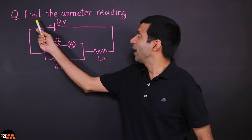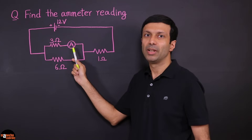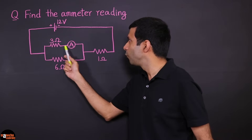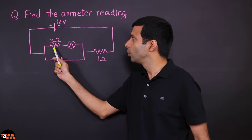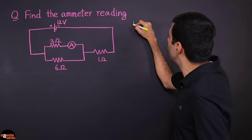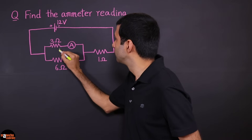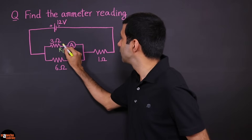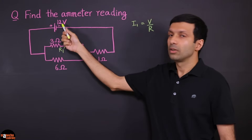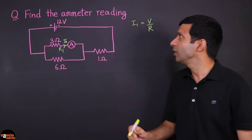Let's take a look at this question: find the ammeter reading in this circuit. The ammeter has the symbol A, and it measures the current. So we want to find the current flowing through this ammeter, which means the current flowing through this 3 ohm resistor. Can we apply Ohm's law? Can we say I equals V by R? No — that's wrong. You can't just use this voltage.